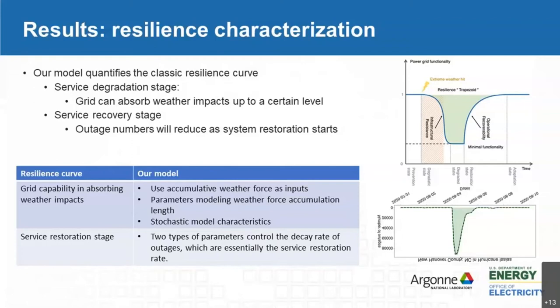Taking one of the prediction results and flipping it, given weather forecasting, this model can tell you when your system is going to see severe degradation of service, how much deeper that degradation can go, when it can be restored, how long it will last, and how many outages you lost during the whole event. This is a fully quantitative model — the first time we can quantitatively characterize system resilience and also predict it.